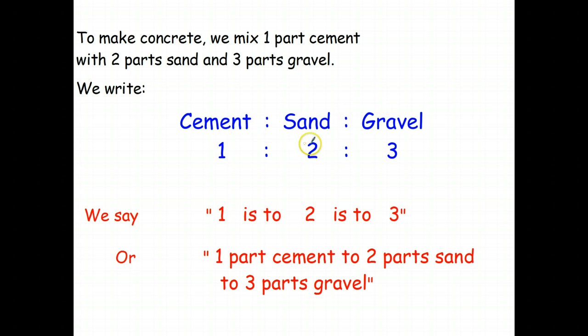Or we can say when we're looking at the numbers here, we write one underneath the cement. Again, there's the colon. Two underneath sand, the colon three underneath gravel. And we can say the ratio is one is to two is to three. Or we could say one part cement to two parts sand to three parts gravel.